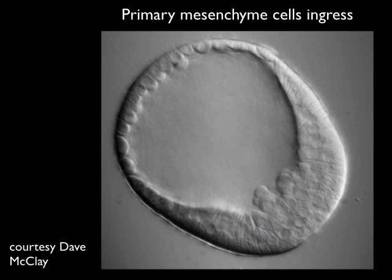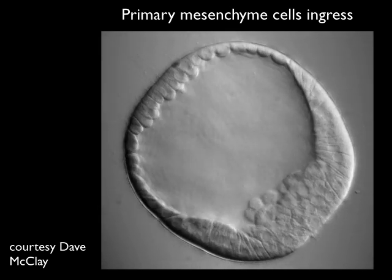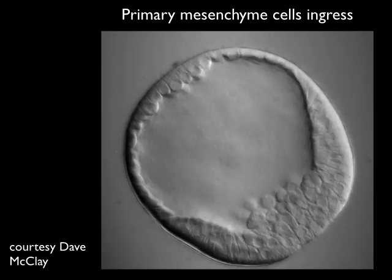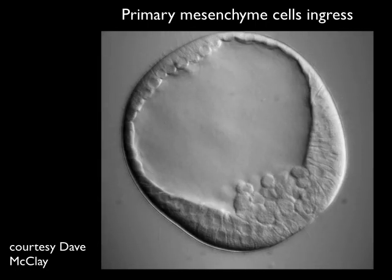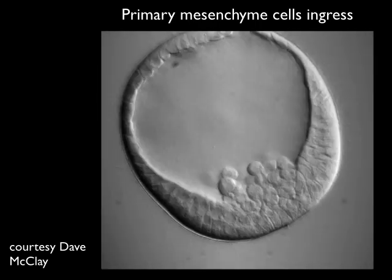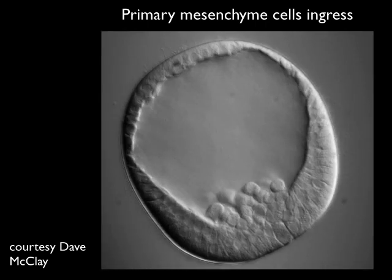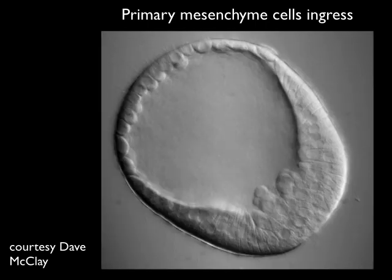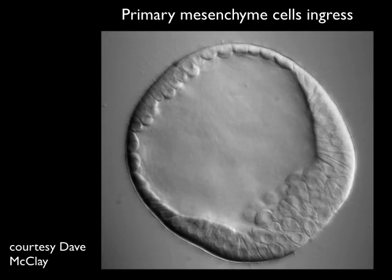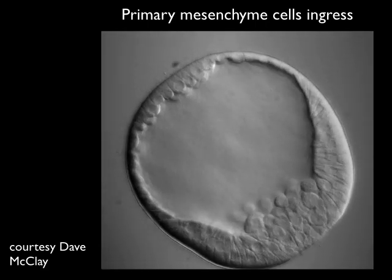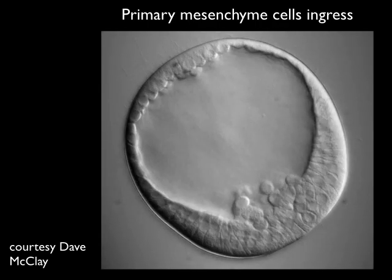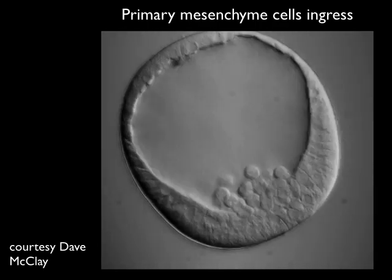Let's look at a movie showing the ingression of primary mesenchyme cells. The vegetal pole is at the lower right in this diagram, animal pole at the upper left. You can see some rounded cells — those are primary mesenchyme cells beginning ingression. These cells pop into the interior, losing their connections to the vegetal plate as they do so, and they pile up just on top of the vegetal plate after ingressing. This is actually an epithelial-to-mesenchymal transition: the cells start off as epithelial cells connected to other cells, then move into the interior as mesenchyme cells. This is a classic EMT.